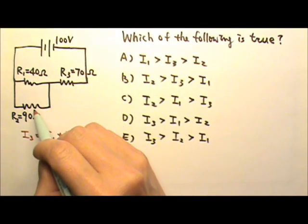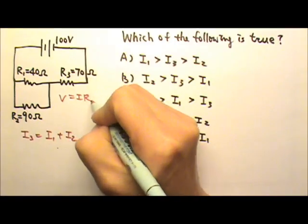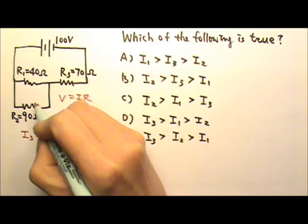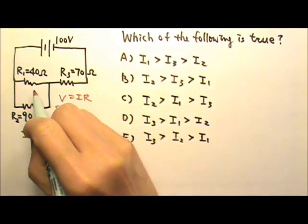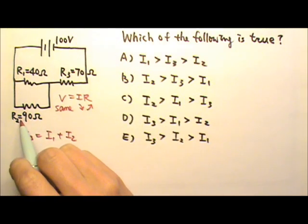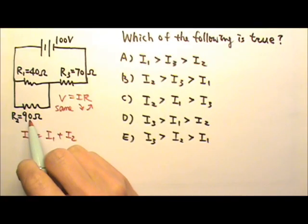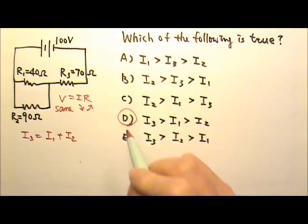R1 and R2 are in parallel, so they have the same voltage. That means the one with a larger resistance would get less current. R2 is larger, so R2 gets less current. So I2 is the smallest. The answer is D.